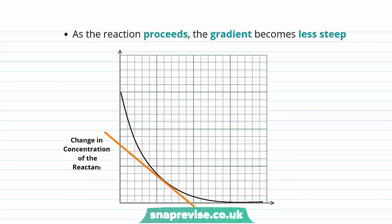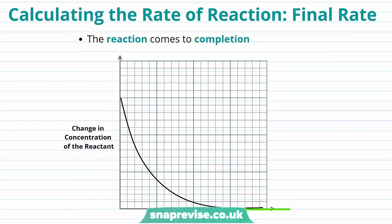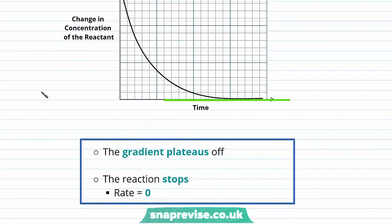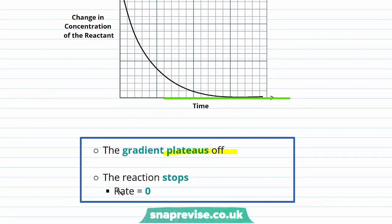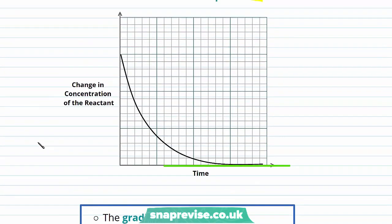If we draw our final tangent at the end of our graph when the reaction has come to completion, we can see that the gradient plateaus — it levels off, the reaction stops, and the rate is now equal to zero. We can use graphs and tangents drawn at different points to calculate how the rate of reaction changes as our reaction proceeds.